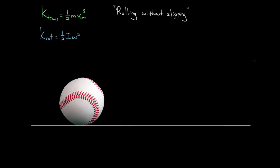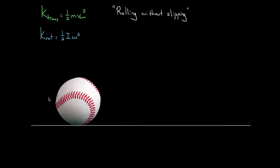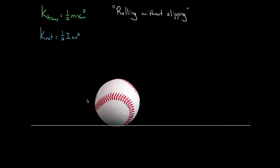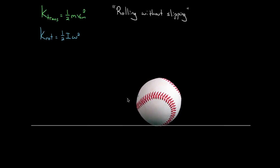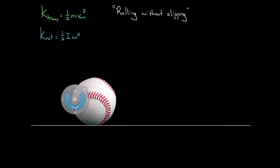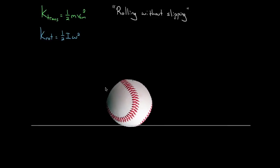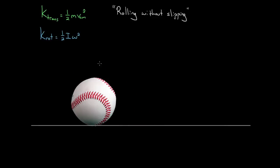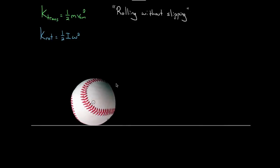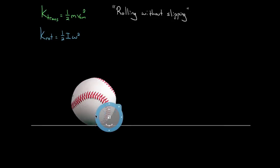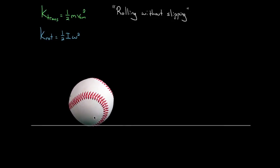Unless you really threw this baseball hard or the ground was really icy, it's probably not going to skid across the ground. Even if it did, that would stop really quickly because it would start rolling and that rolling motion would just keep up with the motion forward. When you have a surface like leather against concrete, it's grippy enough that as this ball moves forward, it rolls, and that rolling motion keeps up so that the surfaces never skid across each other.